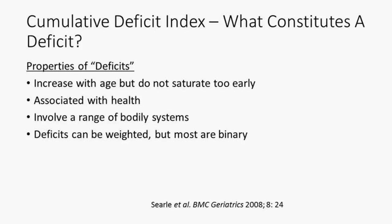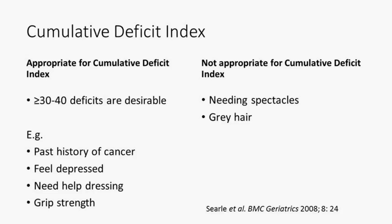Some deficits can be weighted. For example, muscle strength: you might divide a score of one into quintiles, so someone in the top quintile of muscle strength scores 1.0, the second quintile 0.75, the third 0.5, and so forth. These are the ways we approach sorting out what could be considered a deficit and how to use it in a cumulative deficit index.